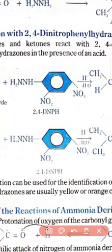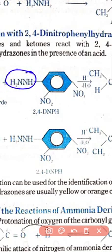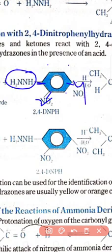The last ammonia derivative is 2,4-dinitrophenyl hydrazine. Look — you have a phenyl ring and on one side is the NH-NH2 group. If we number the ring with carbon 1 bearing the functional group, then carbon 2 and carbon 4 have nitro groups. That is why we call it 2,4-dinitrophenyl hydrazine.